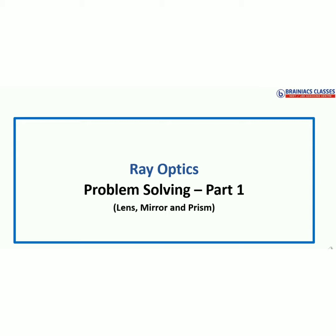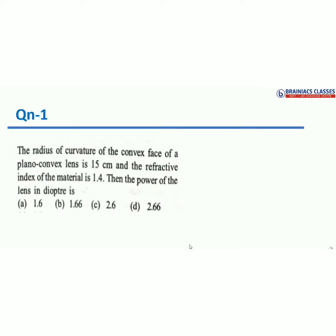We'll go one by one. First question: the radius of curvature of a convex face of a plano-convex lens is 15 centimeters and the refractive index of the material is 1.4. Find the power of the lens in diopters.